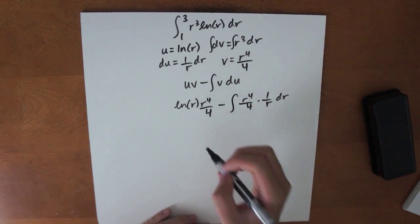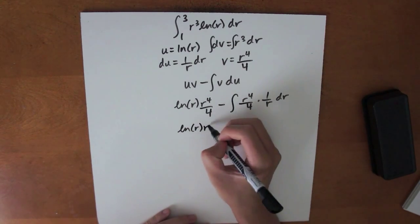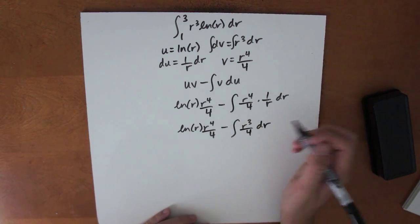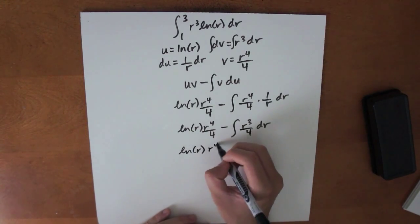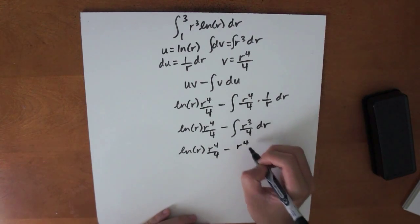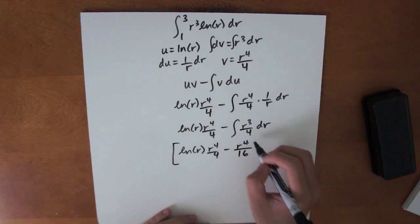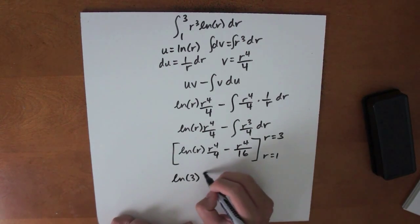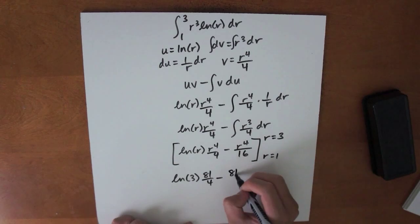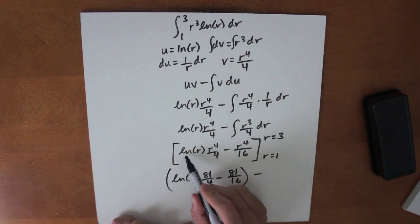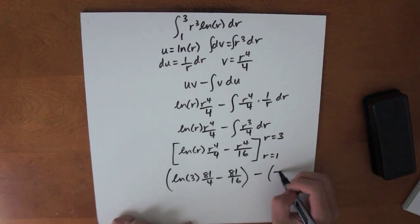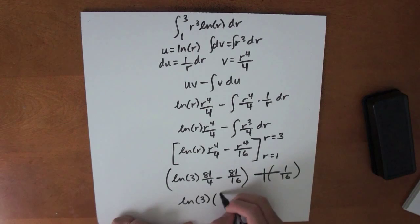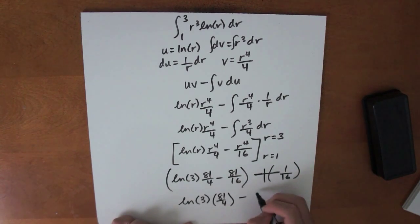We simplify and evaluate the integral. We get ln of r times r to the 4th divided by 4 minus the integral of r cubed over 4 dr, which gives us minus r to the 4th divided by 16. Now we evaluate this from r equals 1 to r equals 3. We get ln of 3 times 81 over 4 minus 81 over 16, minus ln of 1 times 1 over 4 minus 1 over 16. Since ln of 1 is 0, that term becomes 0 minus 1 over 16, which becomes positive 1 over 16. So the final answer is 81 ln 3 over 4 minus 80 over 16, which simplifies to 81 ln 3 over 4 minus 5.